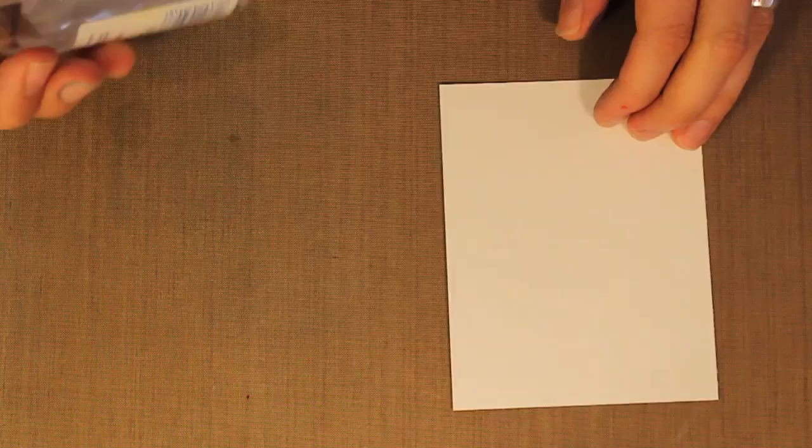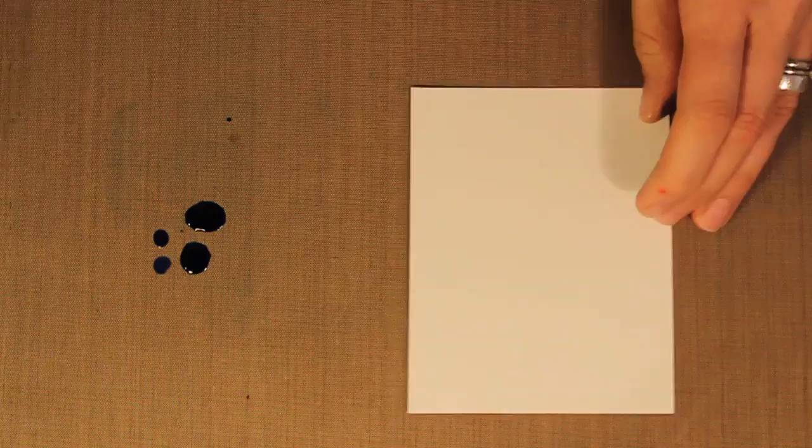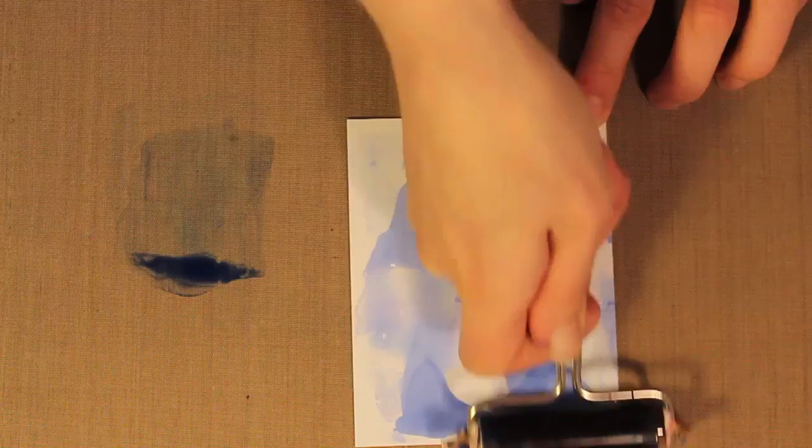And working onto my craft sheet, I'm going to give just a quick spritz of the rubbing alcohol directly onto my craft sheet and then take my alcohol ink and using a little dropper, I'm just going to put some ink down into the rubbing alcohol. Working pretty quickly, I'm going to take my brayer and immediately brayer this onto my cardstock.